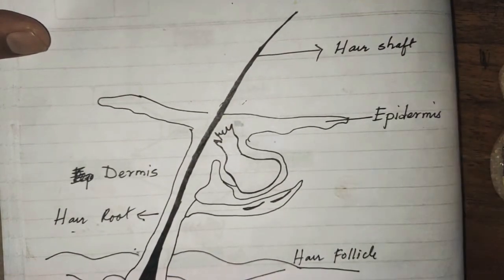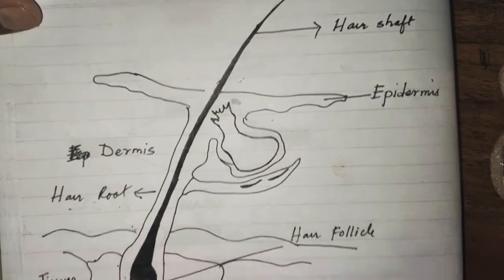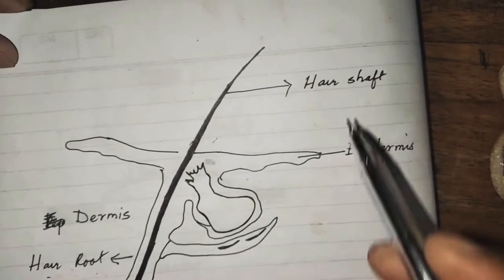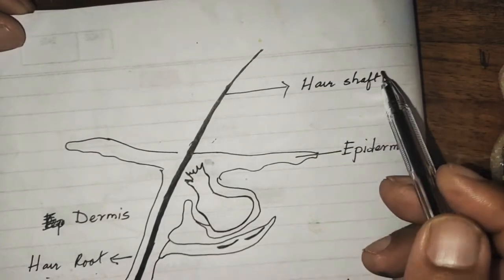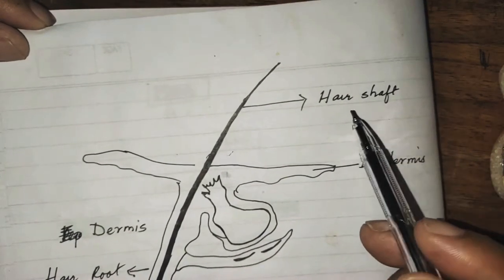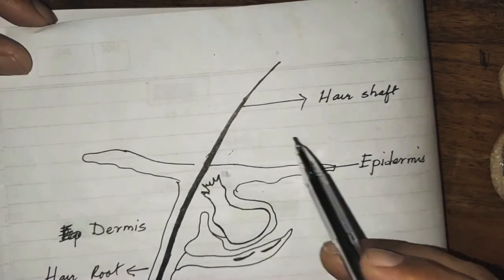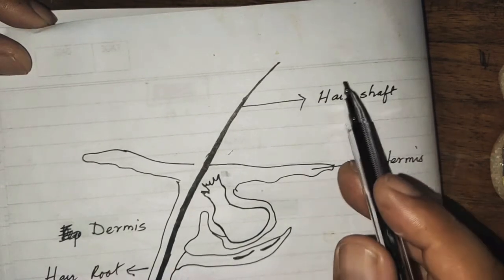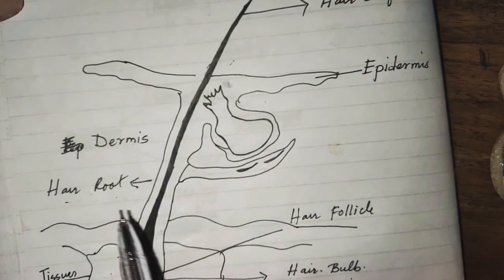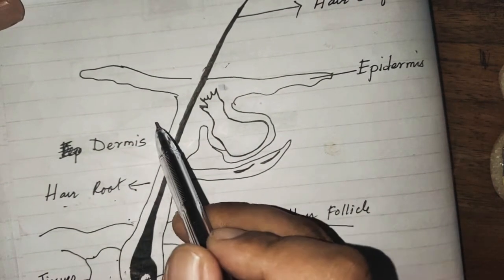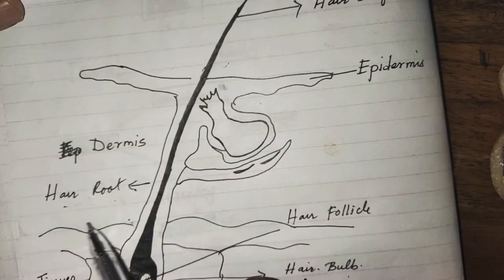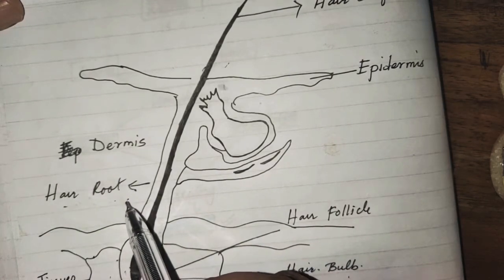The hair is divided into three parts: the hair shaft, hair root, and hair bulb. The hair shaft is the upper part of the hair above the epidermis. The hair root is the basal part of the hair situated deeply in the dermis.